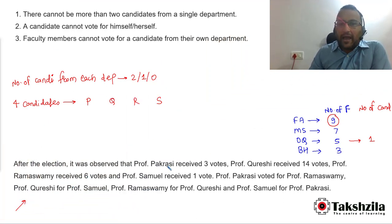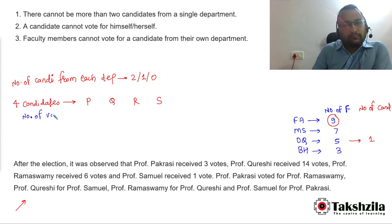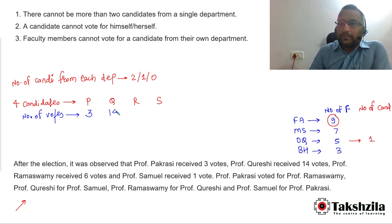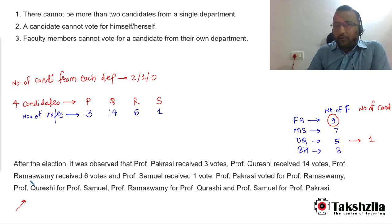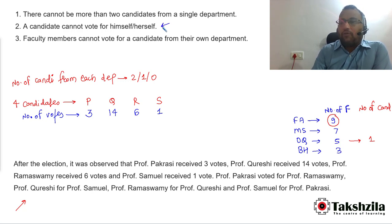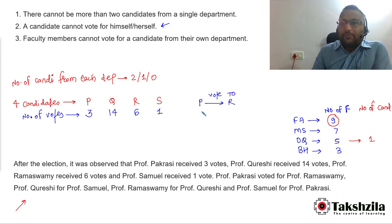After the election it was observed that Professor P received 3 votes, Professor Q received 14 votes, Professor R received 6 votes, and Professor S received only 1 vote. Additionally: Professor P voted for Professor R, Professor Q voted for Professor S, Professor R voted for Professor Q, and Professor S voted for Professor P.